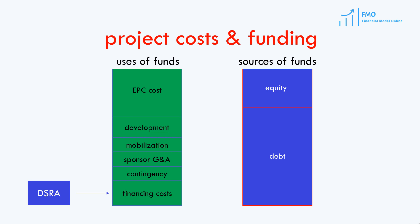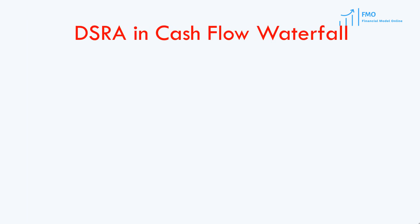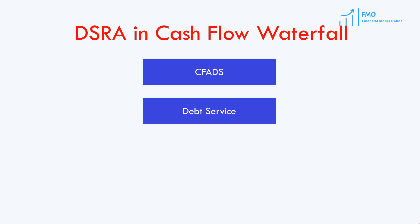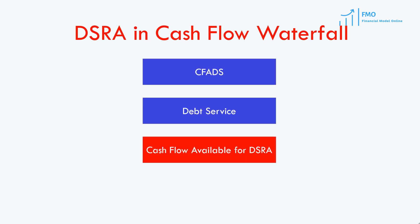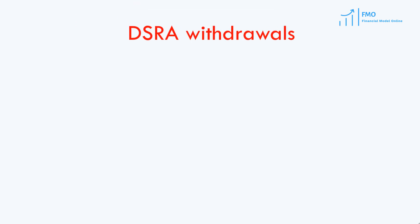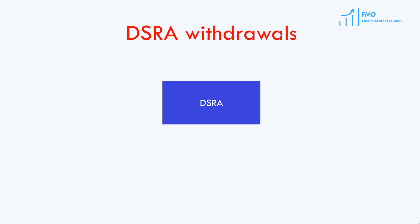During the project's operations, the funding of the Debt Service Reserve Account, if necessary, happens after the debt service. The cash flow from which deposits are made in the Debt Service Reserve Account are called cash flow available before Debt Service Reserve Account. The cash can be withdrawn from the Debt Service Reserve Account by both lenders and the project company.